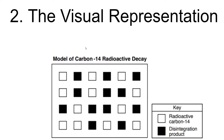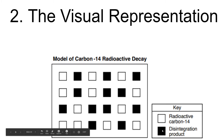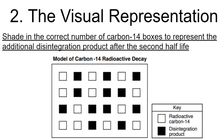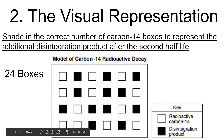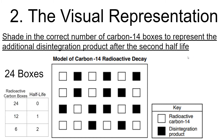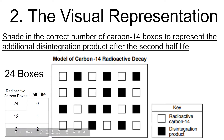Way number two: the visual representation. Here we have a model of carbon-14. The open or blank squares represent the radioactive part, while the darkened squares are the disintegration products. If you count up all the boxes, you'd have 24 boxes. You'd count how many radioactive carbons and how many disintegration products there are. At the beginning, all 24 boxes would be radioactive carbon.